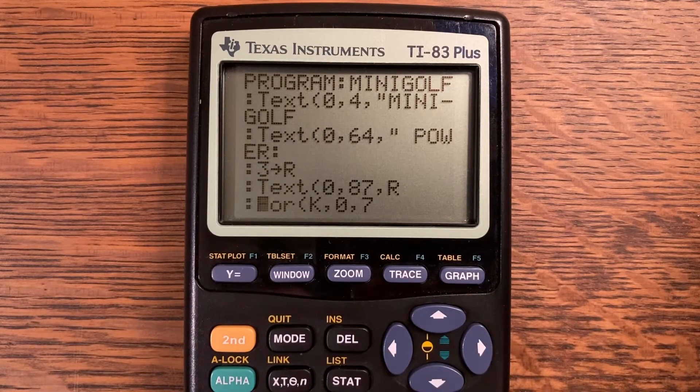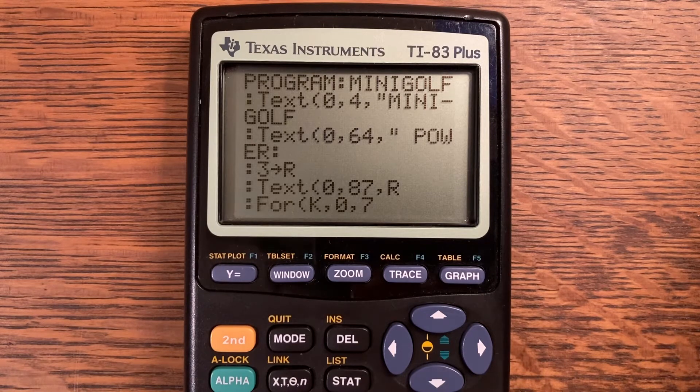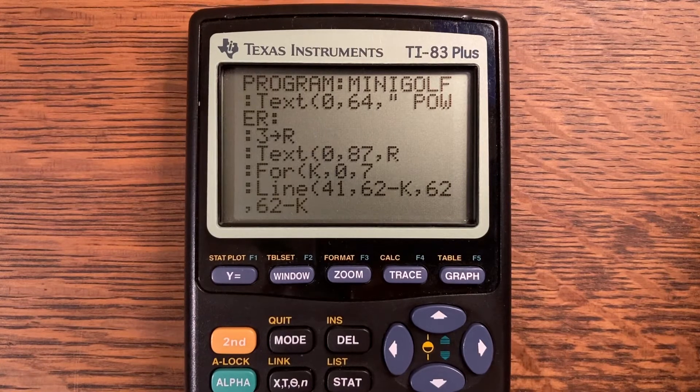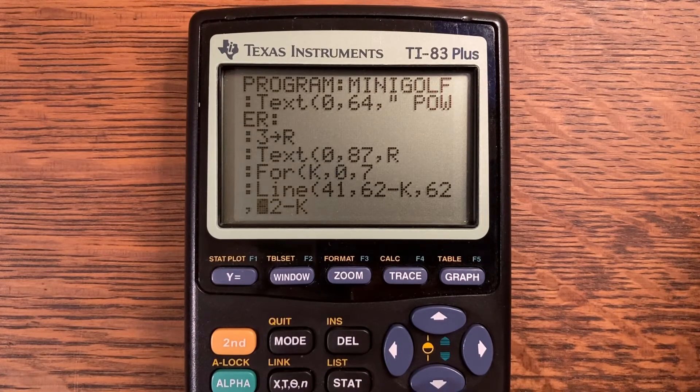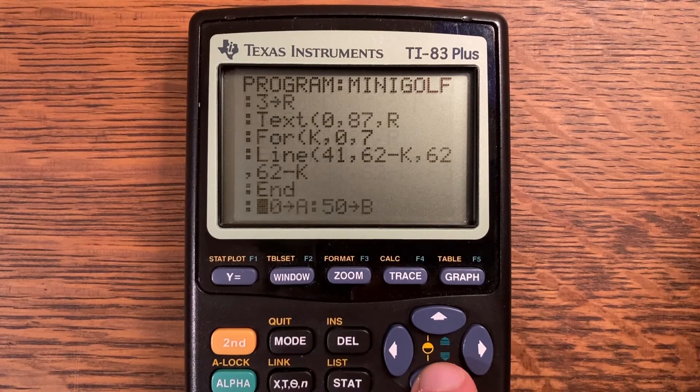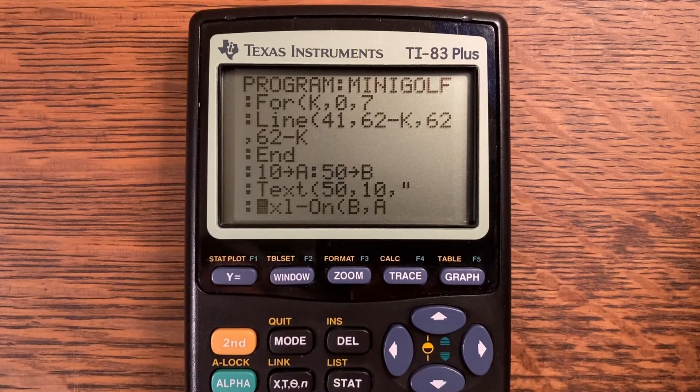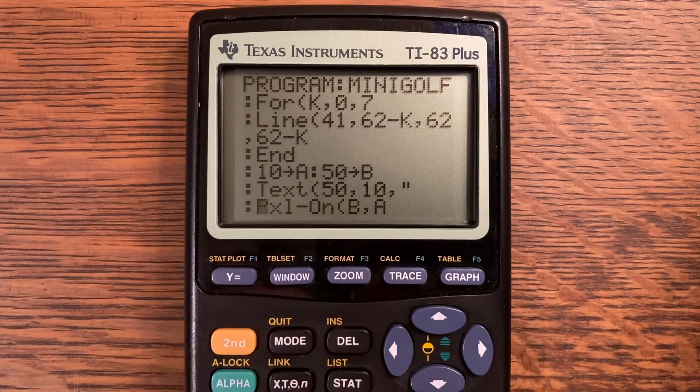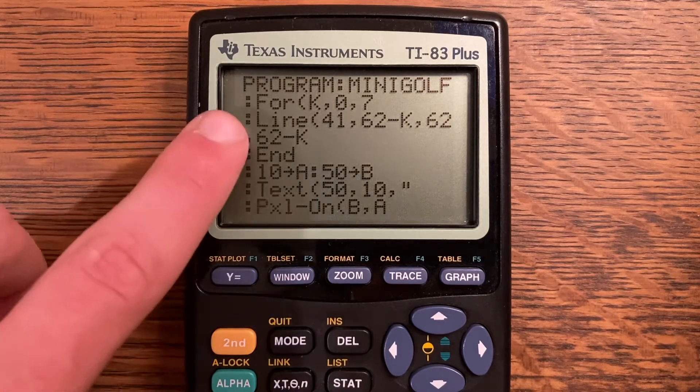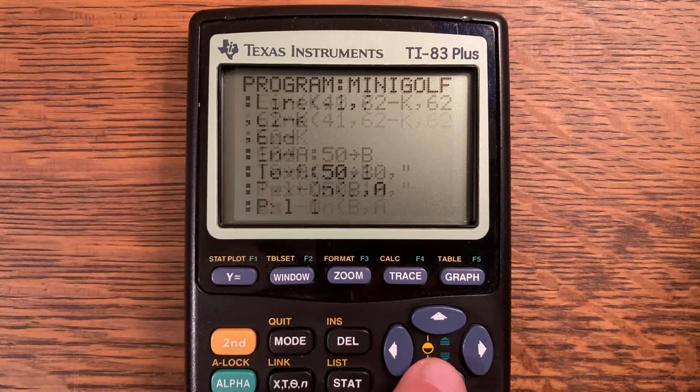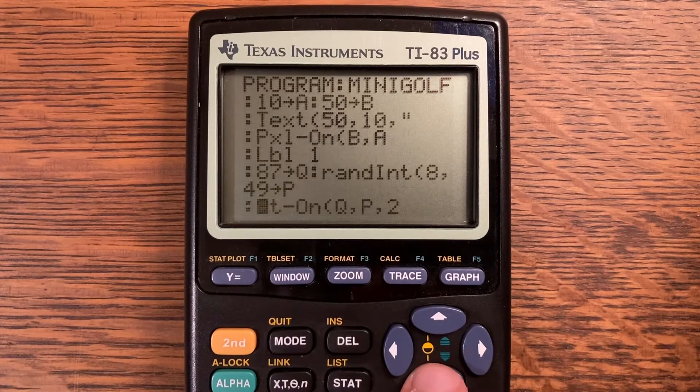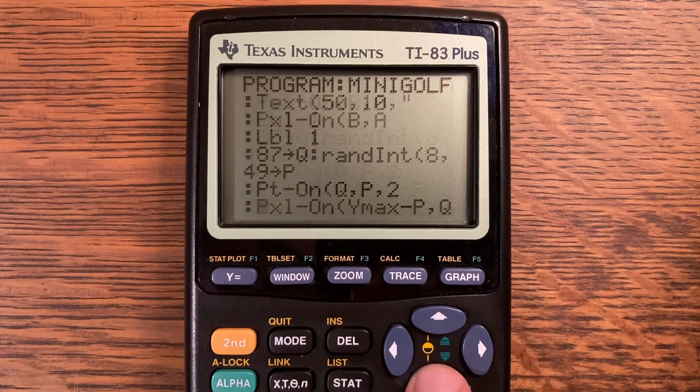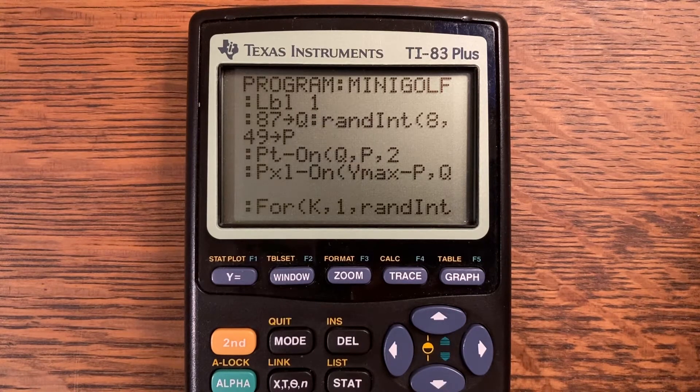And then text 0 comma 64 comma quote space and power and then a little colon right there. Three store into R. Text at 0 comma 87 comma R. For K comma 0 comma 7, line from 41 comma 62 minus K comma 62 comma 62 minus K. And 10 store into A and 50 store into B. So B comma A when we actually do as a pixel coordinate is going to be where our ball is. And then I just erase there just to make sure there's nothing there. Label 1, 87 store into Q. Randint from 8 to 49 store into P.